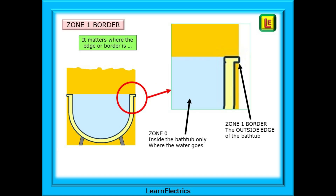We must understand the zone 1 border — it can cause confusion and often appears in exam questions as it's so easy to get wrong. Zone 0 is inside the bathtub, but zone 1 is measured to the outside edge of the bathtub. With most bathtubs that can be a difference of 50 millimeters or more.